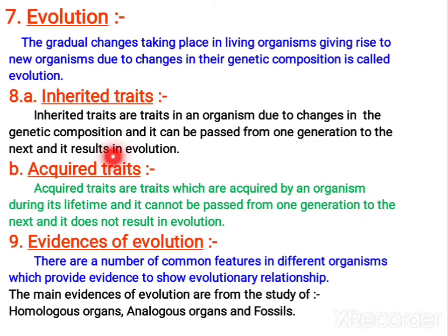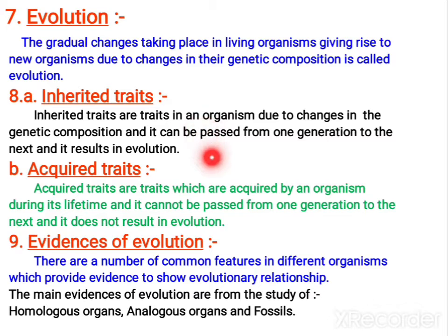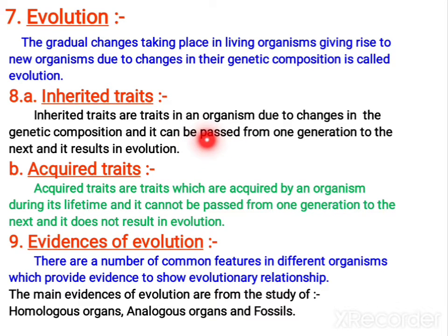When the change occurs in genes, then only it can be inherited from one generation to another generation. For example, your height is also determined by environment — according to what type of food you take. But basically, that is determined by genes. And when you observe hair texture and like that, some features are determined by the genes.